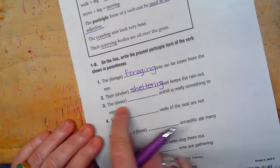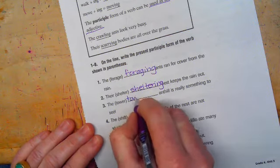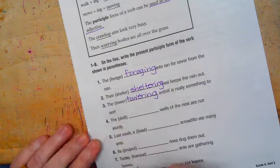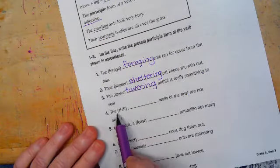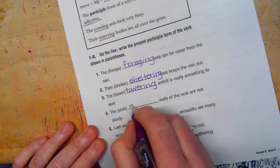Let's look at number three, the tower plus ING, the towering anthill is really something to see. Number four, the shift plus ING, the shifting walls of the nest are not sturdy.